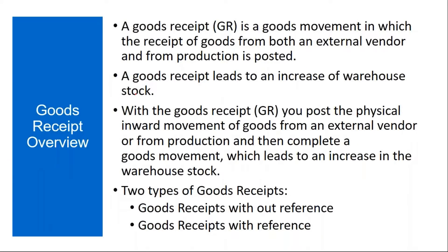Good Receipt is a goods movement in which the receipt of goods from both an external vendor and from production is posted. Good Receipt means basically you are receiving the stock — either from an external vendor or from your production department. When the external vendor delivers the material, the warehouse team will do the GR (goods receipt). And from production, when the production team completes the production activity, they will do the GR.